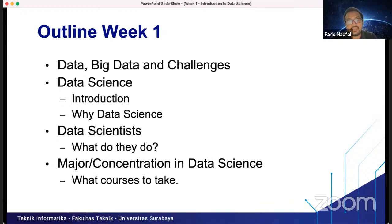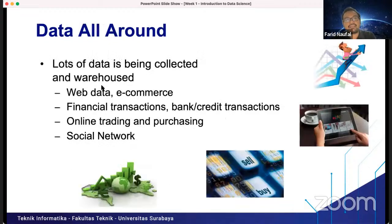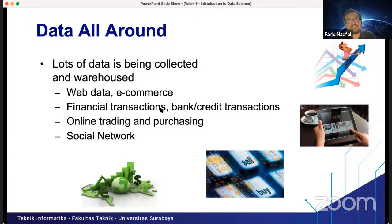If you are really interested in data science — and data science is considered the sexiest job, meaning the most popular job right now in information technology — you need to learn about machine learning and deep learning as well. Deep learning is the most popular algorithm for data science. Data is all around us. Lots of data is being collected and warehoused — from the web, e-commerce, financial transactions, online trading, and social networks.